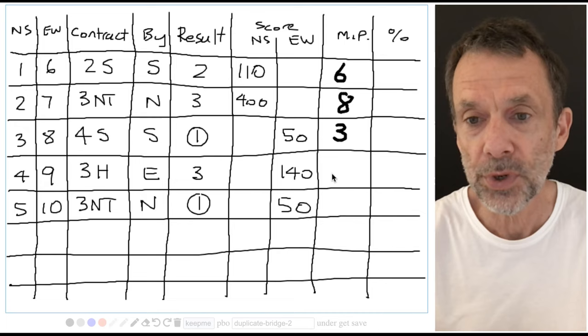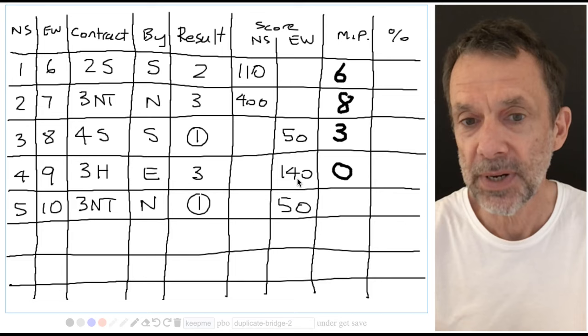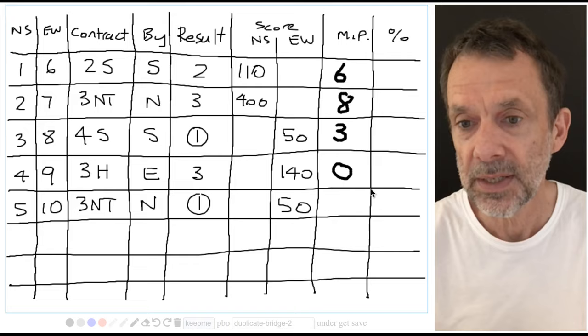Pair four, north-south minus 140, beating nobody. And pair five is the same as pair three. Even though the contracts were different, the score of minus 50 equals three match points.